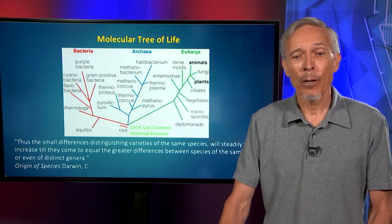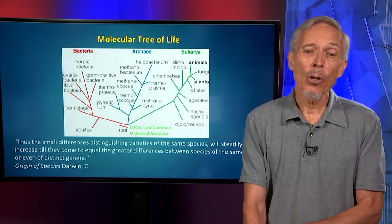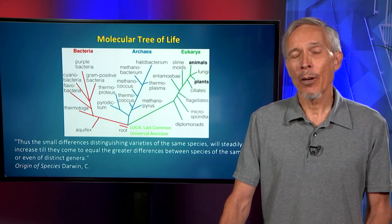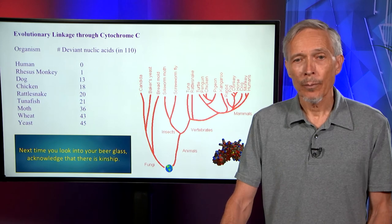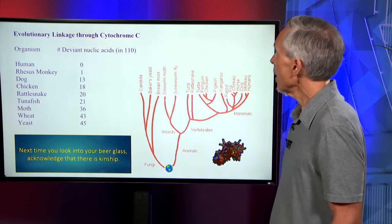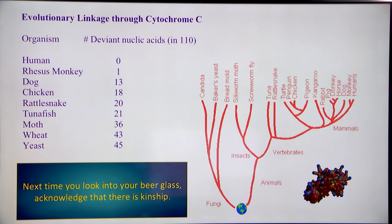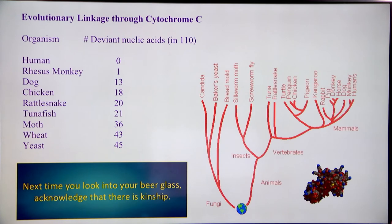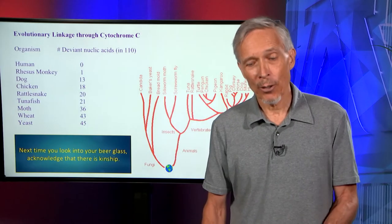Here are the words of Charles Darwin from his famous book Origin of Species: "Thus the small differences distinguishing varieties of the same species will steadily tend to increase until they become equal to the greater differences between the species of the same genus or even of distinct genera." This molecular tree of life is a fundamental piece of modern biology. Using cytochrome C, we can look at the number of deviant nucleic acids which give us the genetic overlap. Our genetic overlap with our ape ancestors is 99%, with dogs 87%, but we actually share almost half our DNA with simple yeast. So the next time you look into your beer glass, you can acknowledge there's some kinship there.